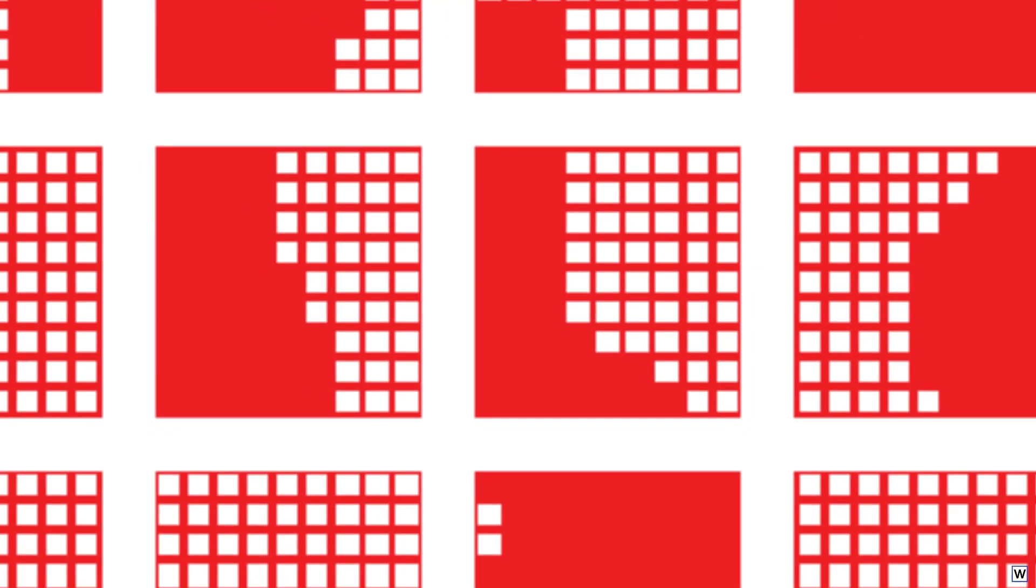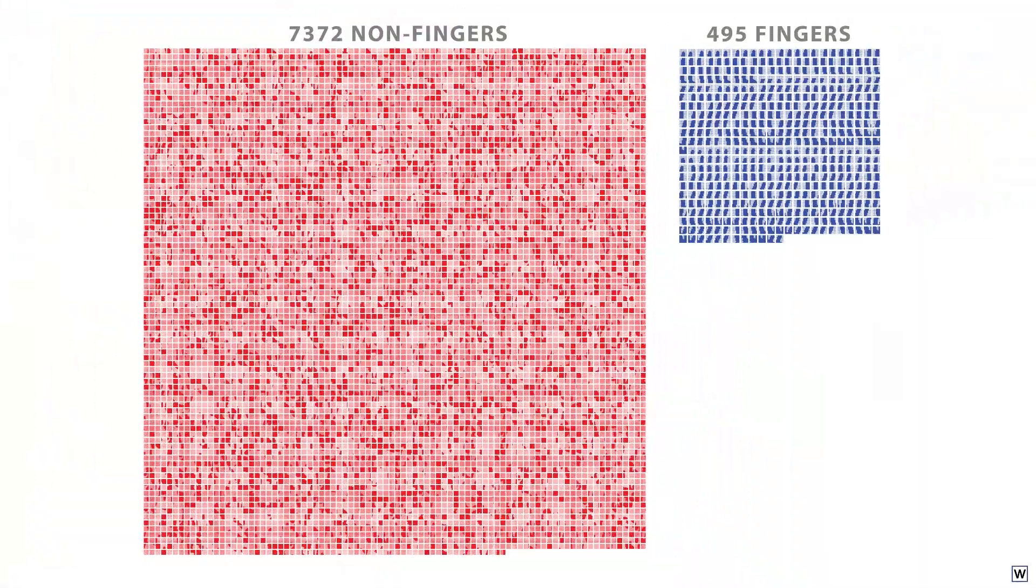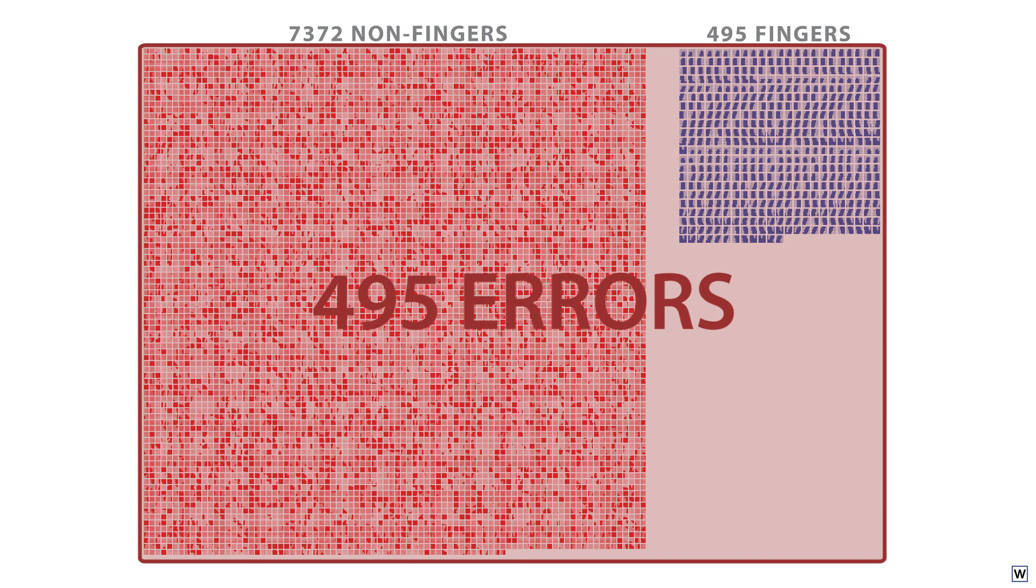Let's test out our new strategy on real data. But before we do, let's consider how our new strategy might perform. Our training set has 7,372 examples of non-fingers and 495 examples of fingers. As we saw with our toy data, if we simply call all of our examples non-fingers, we will make 495 errors by misclassifying all fingers as non-fingers. This is equivalent to our baseline strategy.